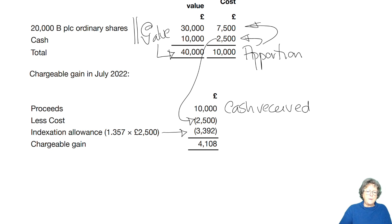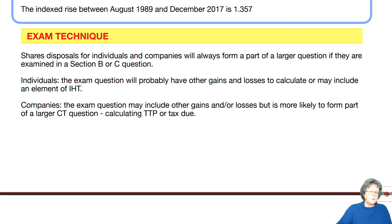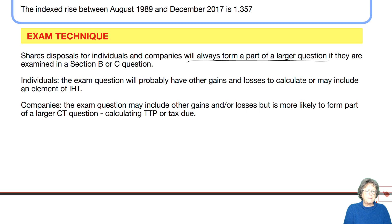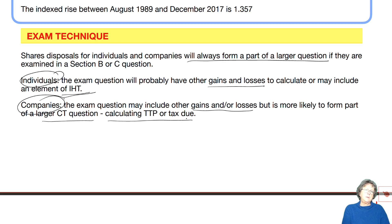Let's go back to the notes and finish off this chapter. Exam technique: share disposals for individuals and companies will always form part of a large question in B or C. Make sure for individuals that you deal with AEA and don't include indexation allowance. The computations always look the same. For individuals, there might be an element of IHT or other gains and losses. For companies, it might form part of other gains or losses, or it might form part of a larger corporation tax question where you've got to work out TTP or the tax due.